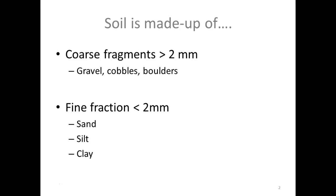So soil is made up of coarse fragments, in other words, fragments in the soil that are greater than 2 mm, like gravel, cobbles, boulders. And the fine fraction is anything less than 2 mm, like sand, silt, and clay. Now, this fine fraction is what we're going to focus on today.